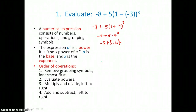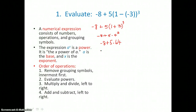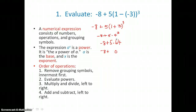The third step in our order of operations is to multiply and divide working left to right. We only have multiplication: 5 times 64. 5 times 4 is 20, carry the 2, so we get 320.